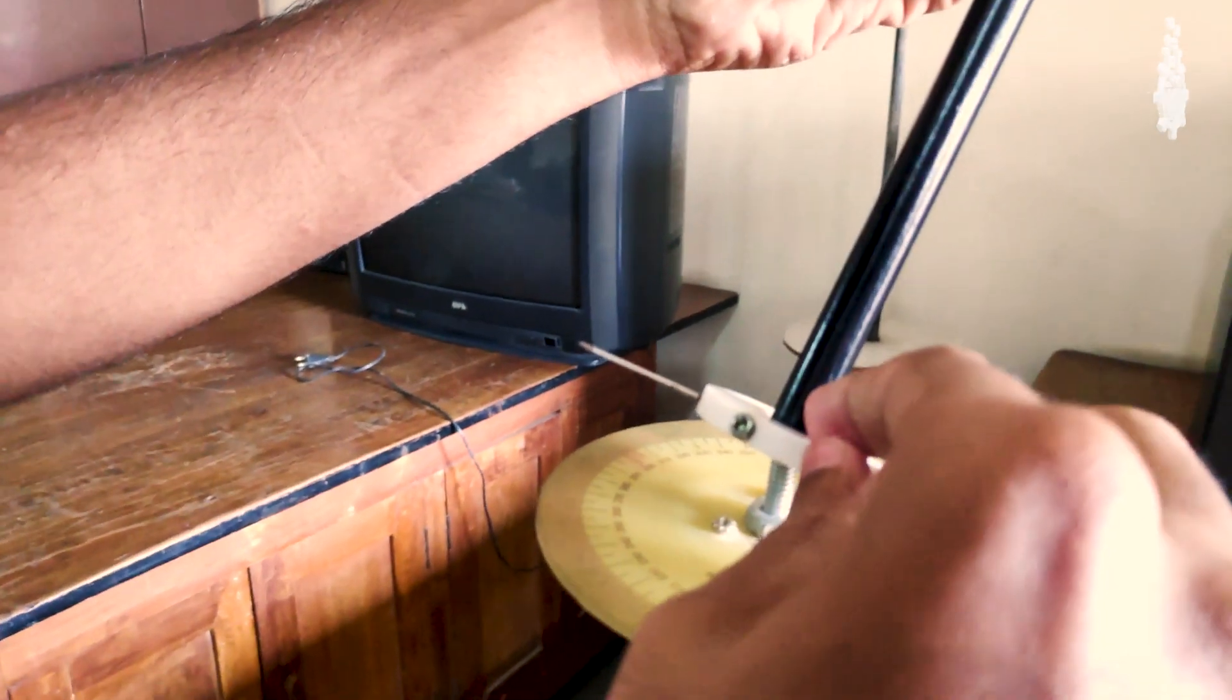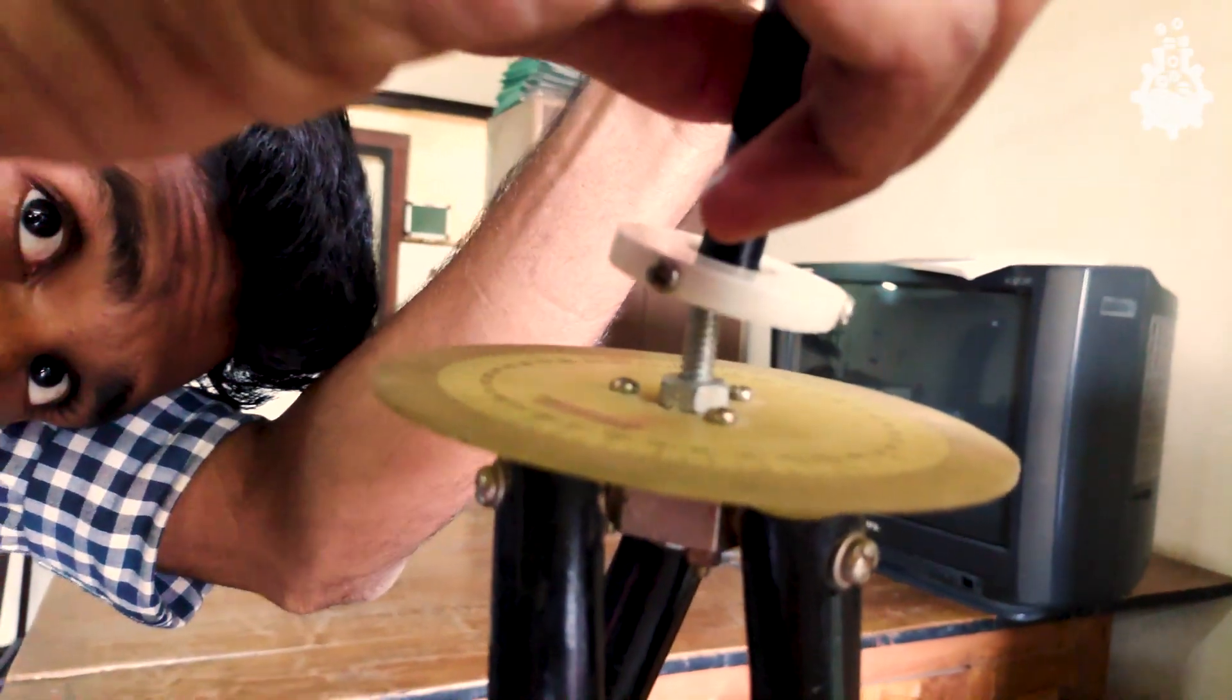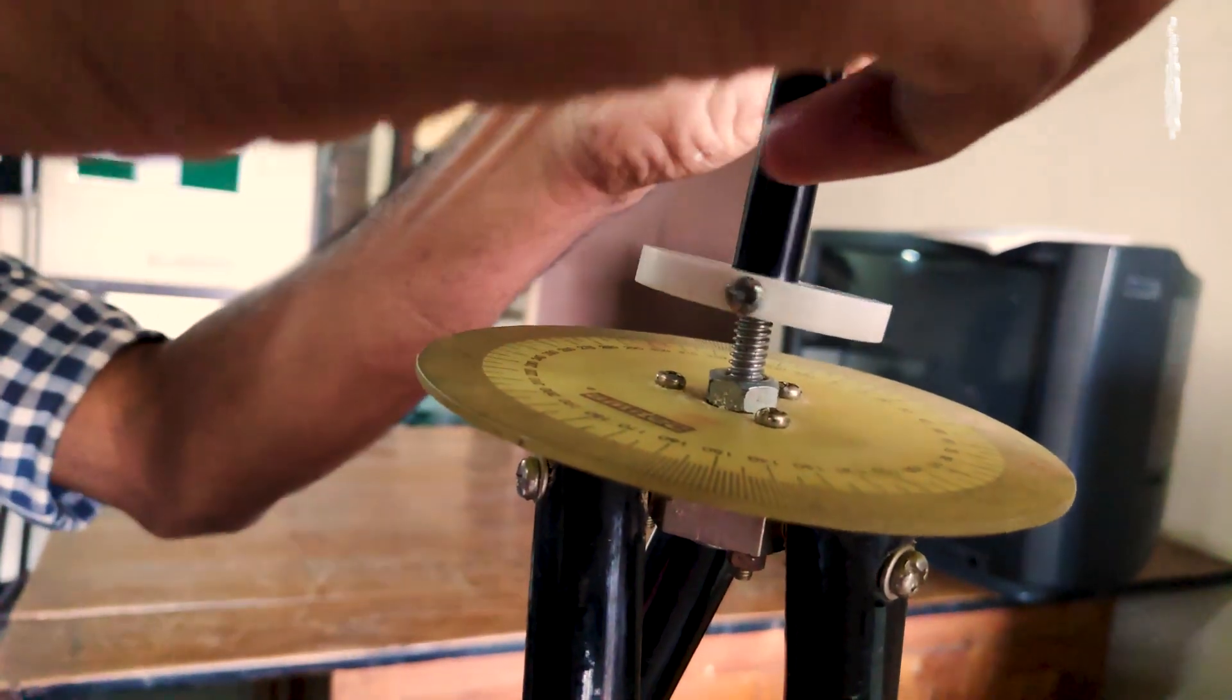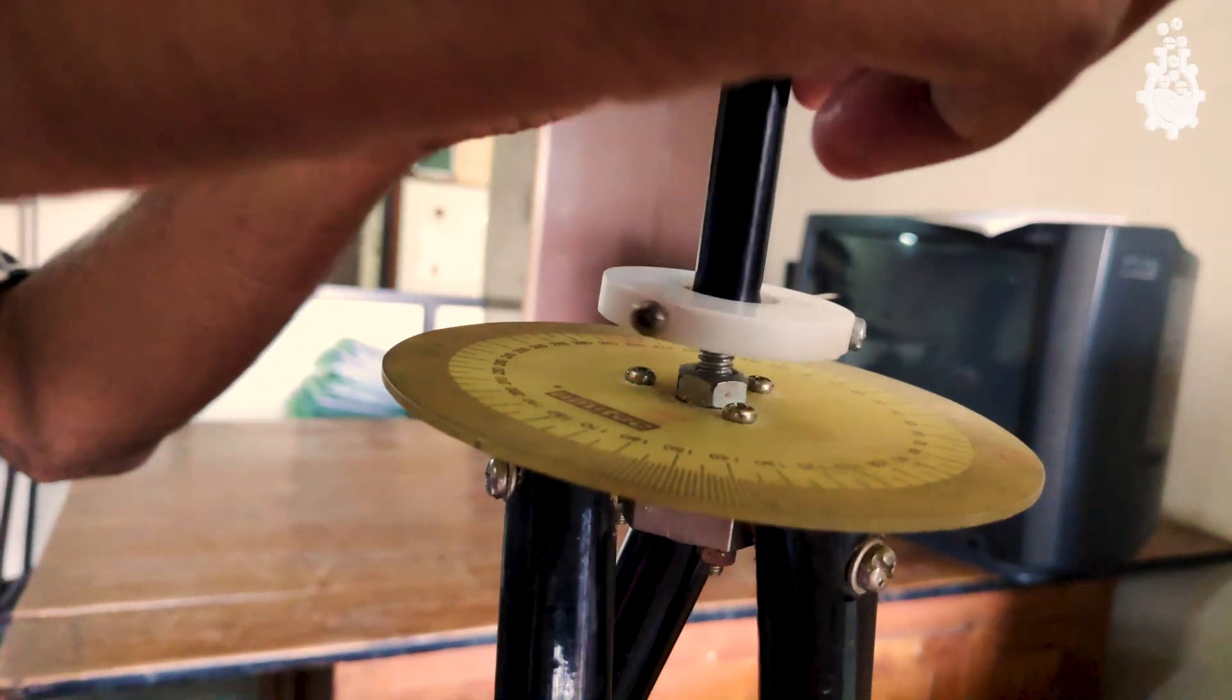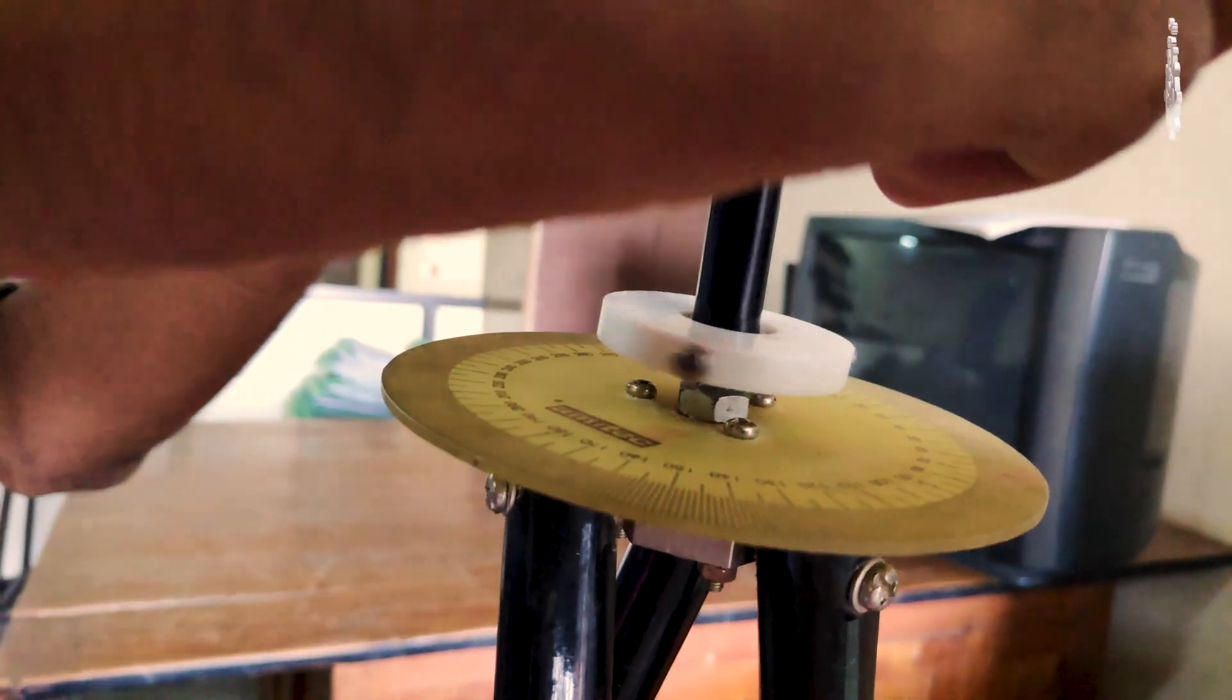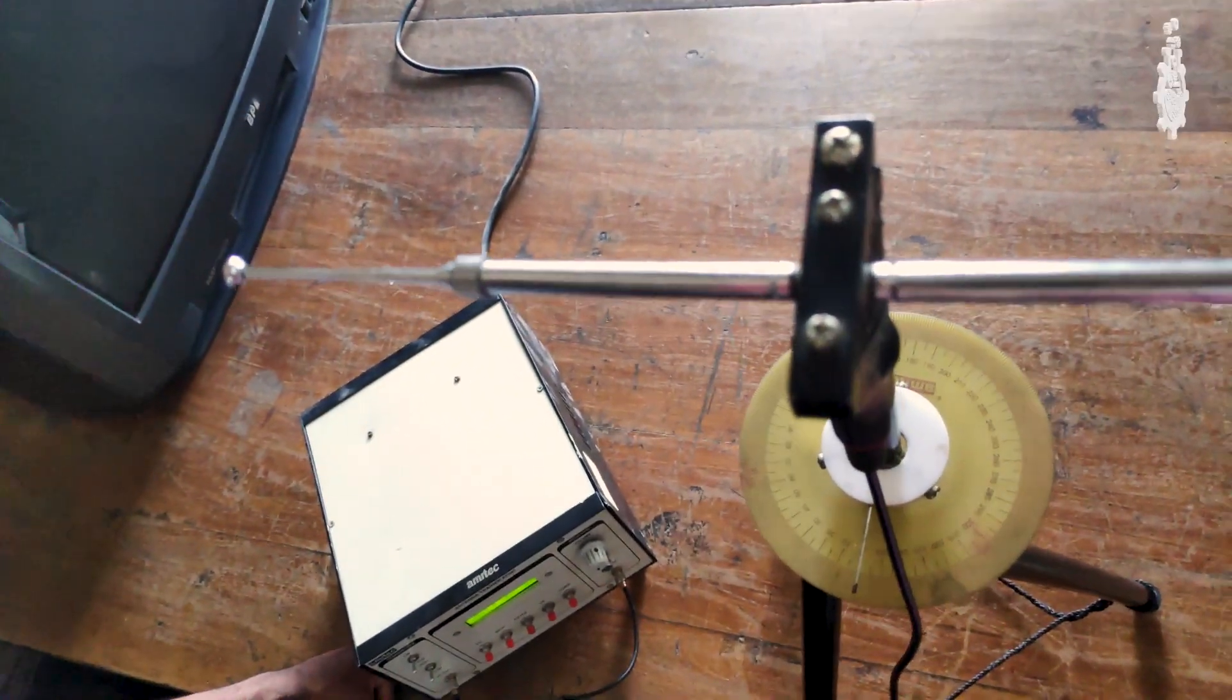Now in a similar manner, let's assemble the receiver base, but here make sure you don't screw the connector too tight, otherwise the azimuth scale would be locked. Just ensure that we have enough play on the scale. Next, set the zero scale with our pointer, and we are good to go.